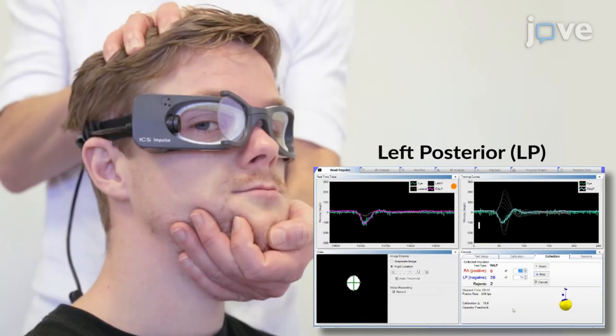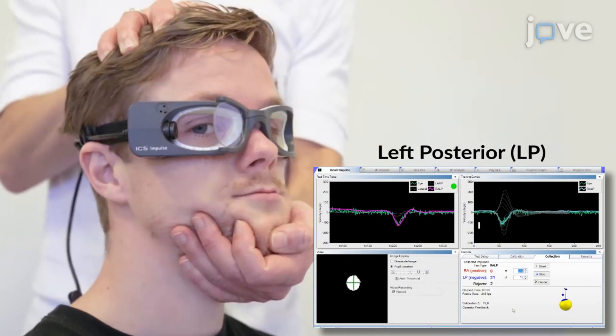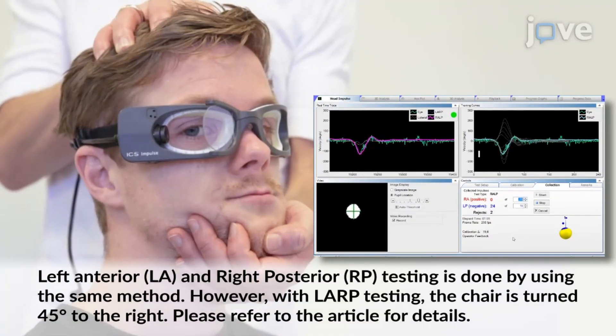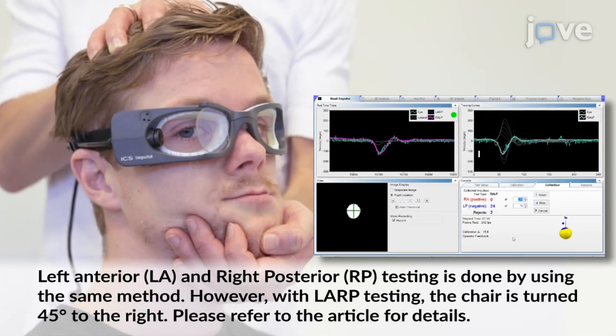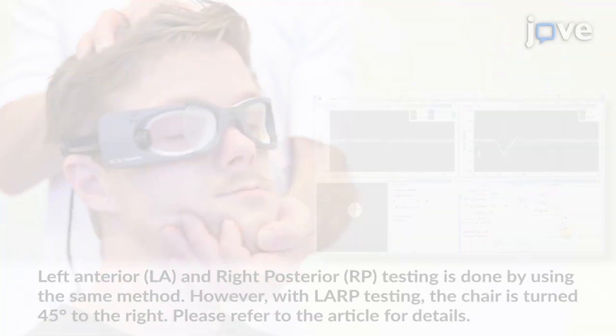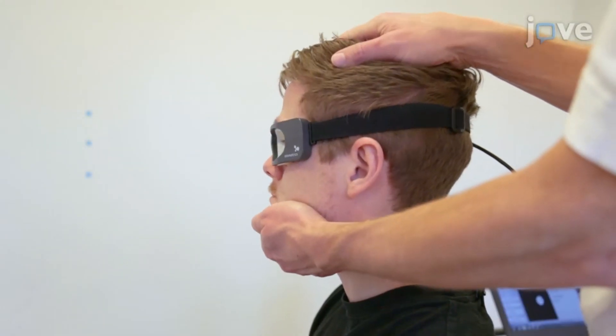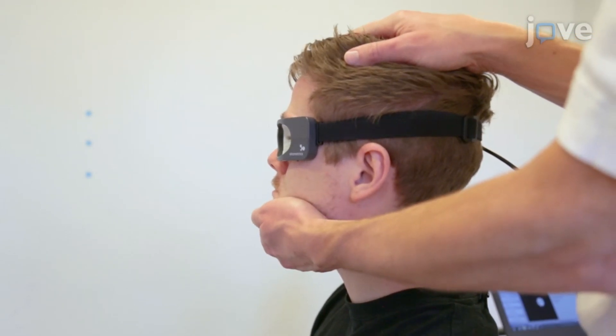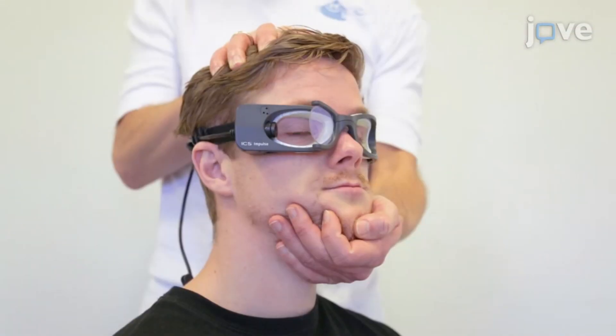Following that, for the posterior SCC testing, rotate the participant's head backwards in the pitch plane perpendicular to the wall. In summation, rotate the participant's head forwards in the pitch plane perpendicular to the wall for anterior SCC testing, and then backwards in the pitch plane perpendicular to the wall for posterior SCC testing.